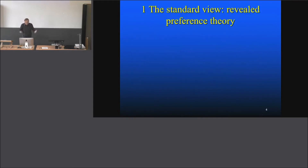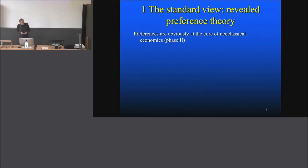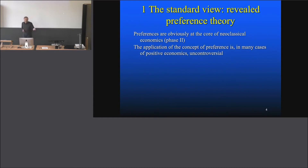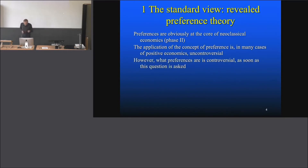Nobody really has a standard opinion. The standard view is revealed preference theory. Preferences are obviously at the core of neoclassical economics in phase two, and you are familiar with that. The application of the concept of preferences in many cases of positive economics is uncontroversial — you've probably calculated examples during undergraduate studies where you apply preferences to a model situation, and it works. It seems quite uncontroversial. However, what preferences actually are is controversial as soon as the question is asked, which is a standard situation.